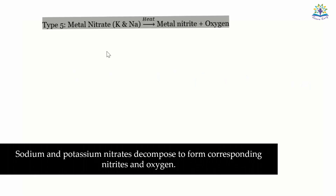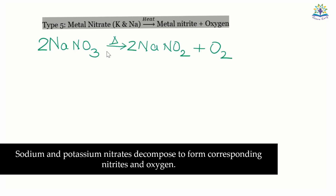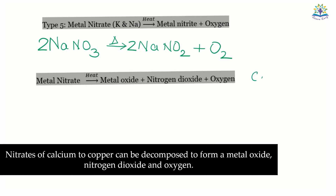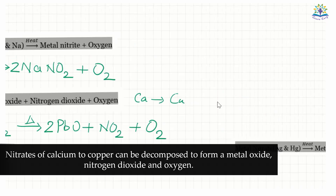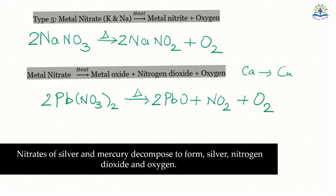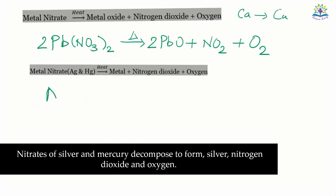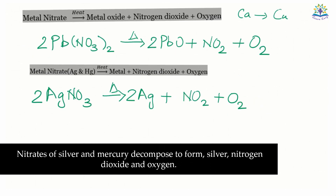Now let's see the thermal decomposition of metal nitrates. Sodium and potassium nitrates decompose to form corresponding nitrites and oxygen. Nitrates of calcium to copper can be decomposed to form a metal oxide, nitrogen dioxide, and oxygen. Whereas nitrates of silver and mercury decompose to form silver, nitrogen dioxide, and oxygen.